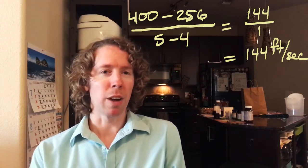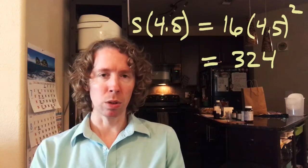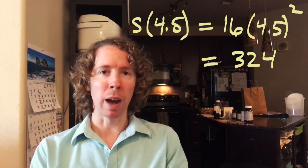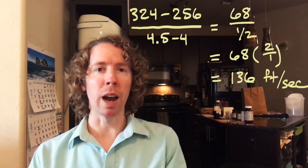That gives us some kind of approximation of how fast the rock is traveling after four seconds, but we'd really like to know more precisely. So next we'll look at the average speed using a smaller interval — instead of one second from t equals four to t equals five, let's take half a second, from t equals four to t equals four and a half. We go through the same calculation using four and a half instead of five: distance at four and a half minus distance at four seconds, divided by one half. That gives us another average speed.